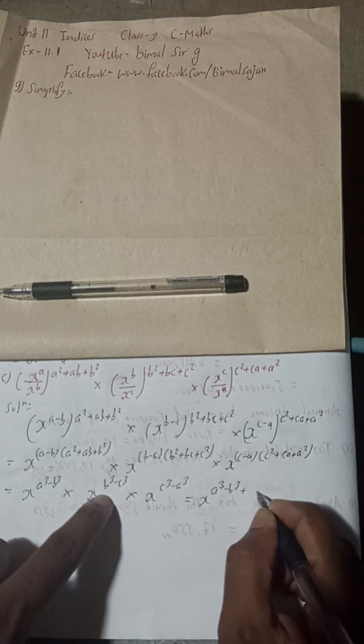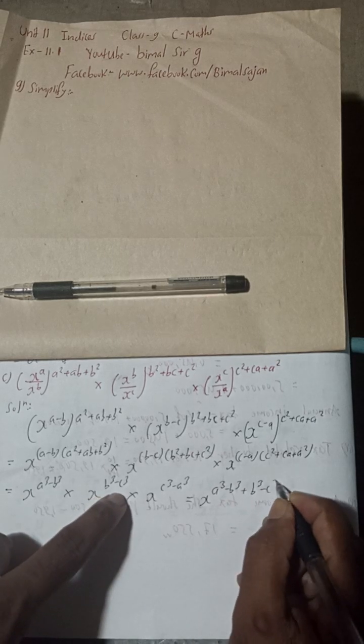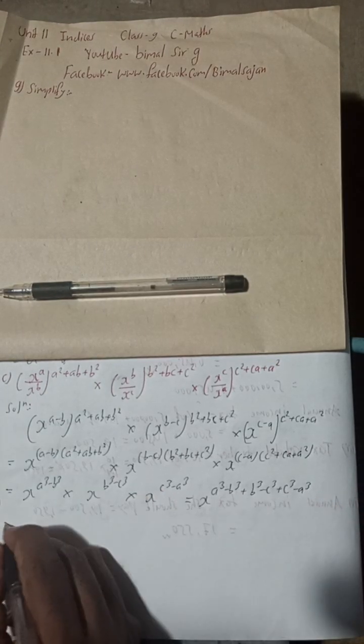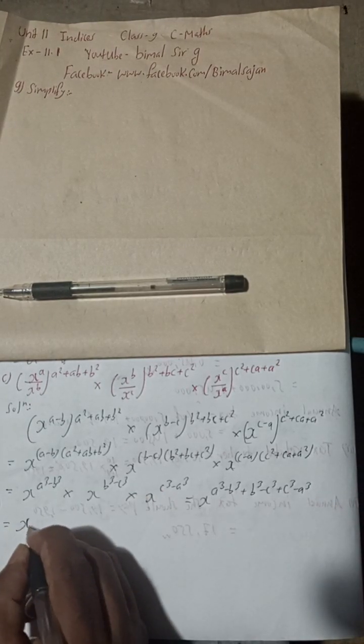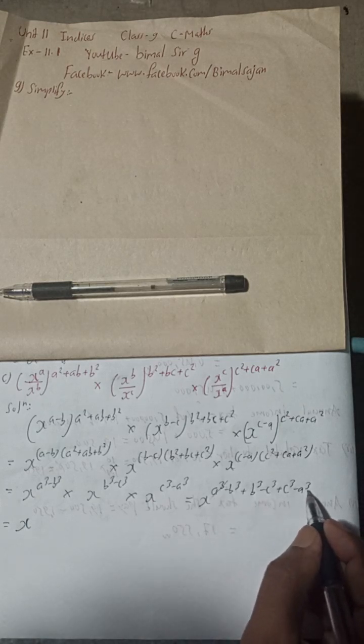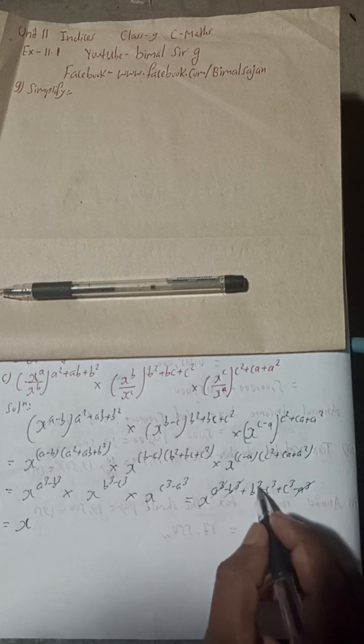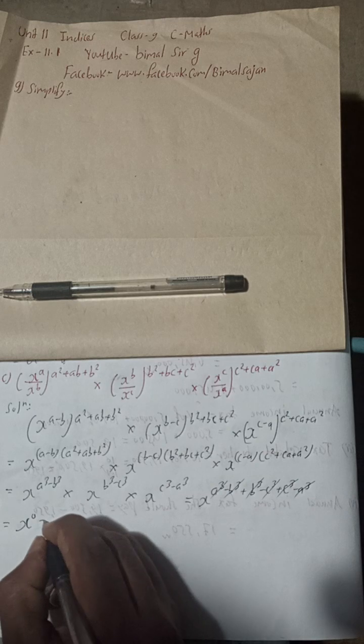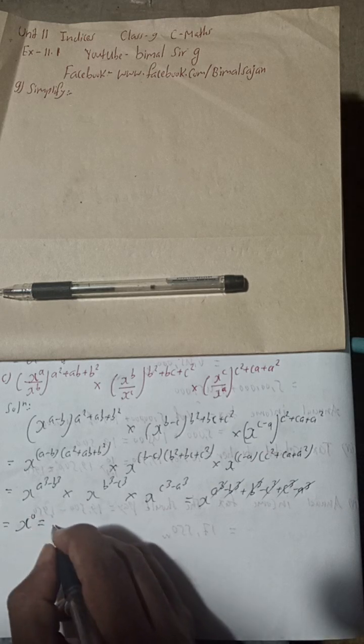So this is x to the power (a³ - b³ + b³ - c³ + c³ - a³). So this is nothing but zero. So this will be zero. Now x to the power 0 is 1, so we got here one as the answer.